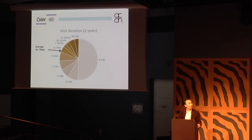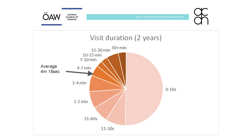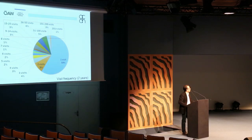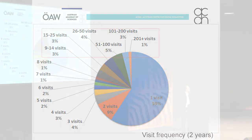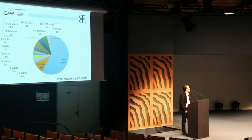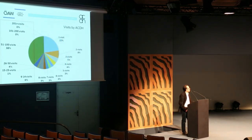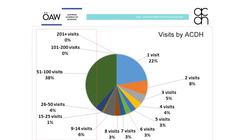This is a simple pie chart about visit duration. I would say many users actually spend a lot of time on VLO. This is how often people visit VLO, and half of them are actually first-time visitors. But you can also see some kind of language enthusiasts — there are users with 50 visits, 100 visits, 200 or something like that.